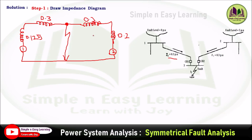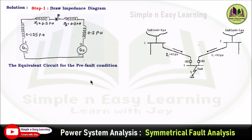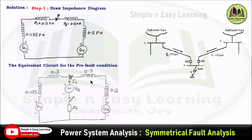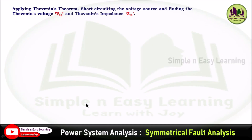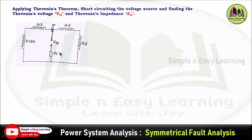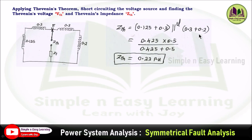This is the complete impedance diagram. The equivalent circuit for the pre-fault condition is represented including the Thevenin voltage source and fault impedance. Applying Thevenin's theorem, we short-circuit the voltage sources and find the Thevenin impedance Z_Thevenin from the fault point. Looking from bus 3, on the left-hand side 0.125 and 0.3 are in series; on the right-hand side 0.3 and 0.2 are in series. Both results are then in parallel with each other.